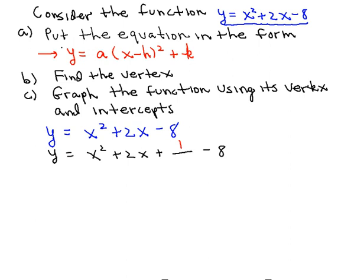Now, what we've done is add 1 to the right-hand side of the equation. So what we need to do to balance the equation is to subtract a 1. So now if we factor, we're going to have y is equal to x plus 1 quantity squared, then minus 9.